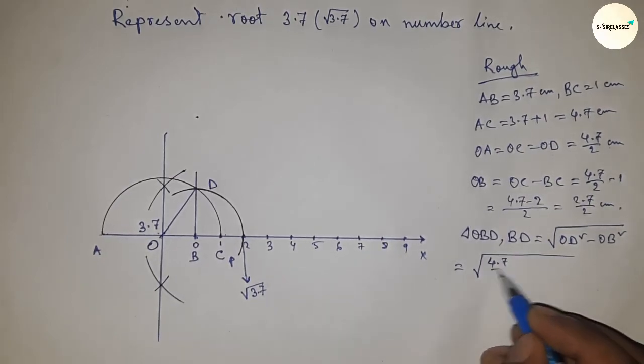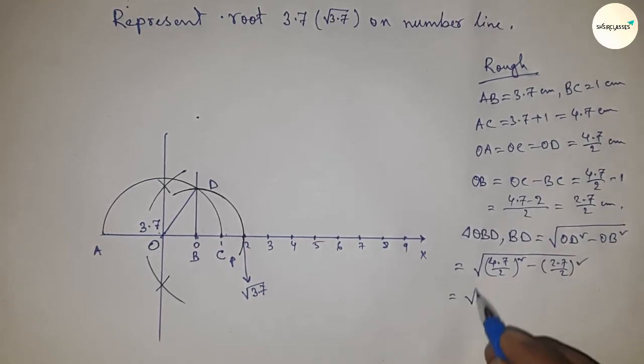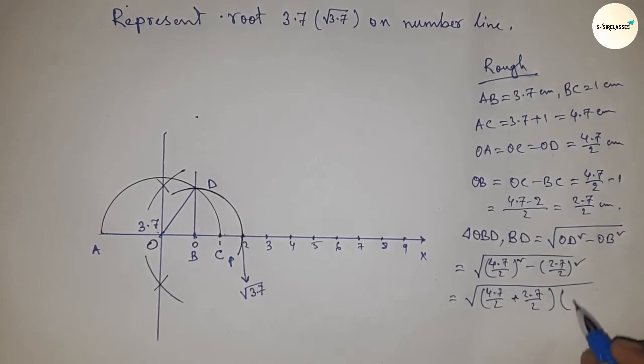So putting the value of OD and OB, and now applying a formula a square minus b square equal to a plus b and a minus b.